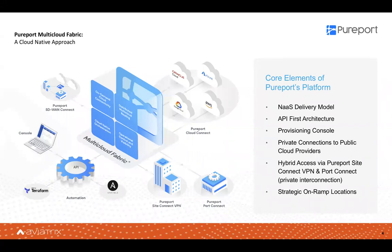Pureport was founded on the principle that cloud networking should be just as fast and agile as the cloud itself, particularly with respect to the CSP's private network offerings. We call our solution the Pureport Multicloud Fabric, and in a nutshell, we enable fast, easy access to the private connectivity options for each cloud provider — specifically AWS Direct Connect, Azure Express Route, Google Cloud Interconnect, and Oracle Fast Connect. We enable customers to easily combine these connection types into a full mesh multicloud network, and also tie in customer prem locations via private line, IPsec, and SD-WAN connections.